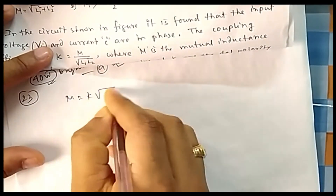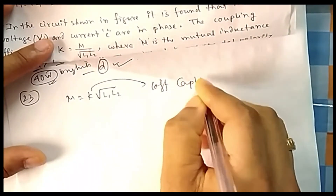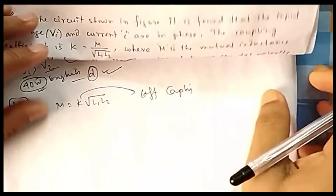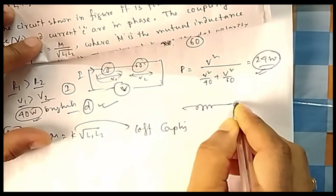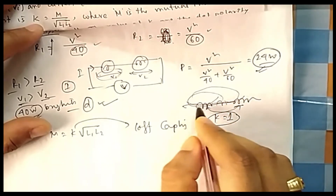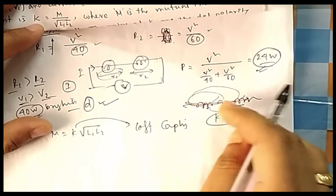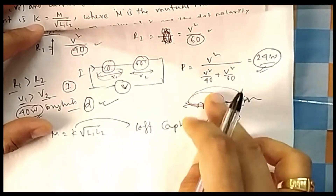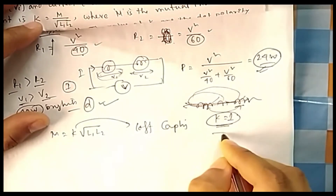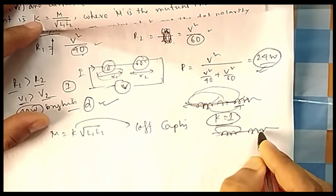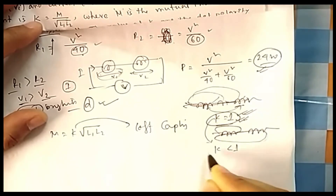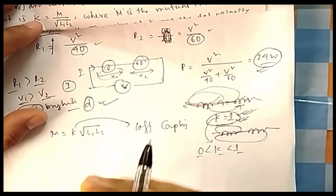Question 23: mutual inductance satisfies M = k√(L1·L2), where k is the coefficient of coupling. k represents how closely the two coils are coupled. If they are very close, all the flux from one coil links the other. Perfect coupling means k = 1, meaning 100% of the flux through L1 also passes through L2. In practice, perfect coupling never occurs, so k is always between 0 and 1.